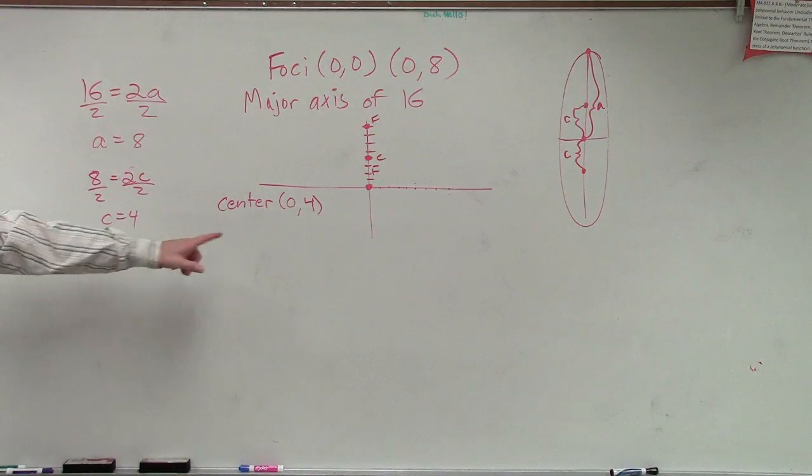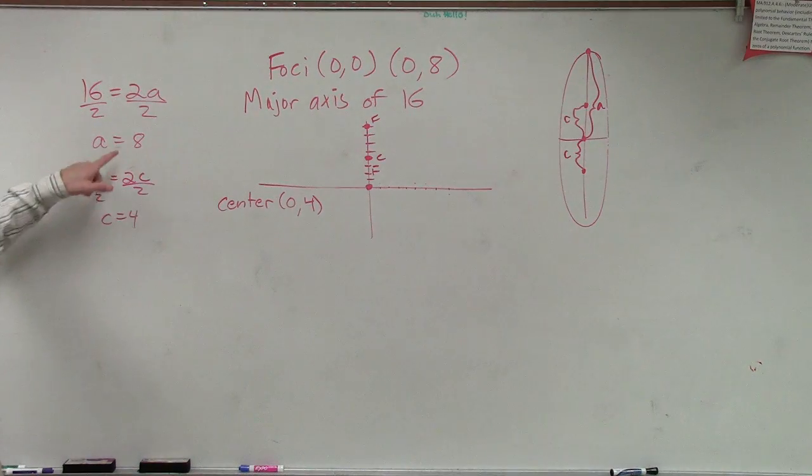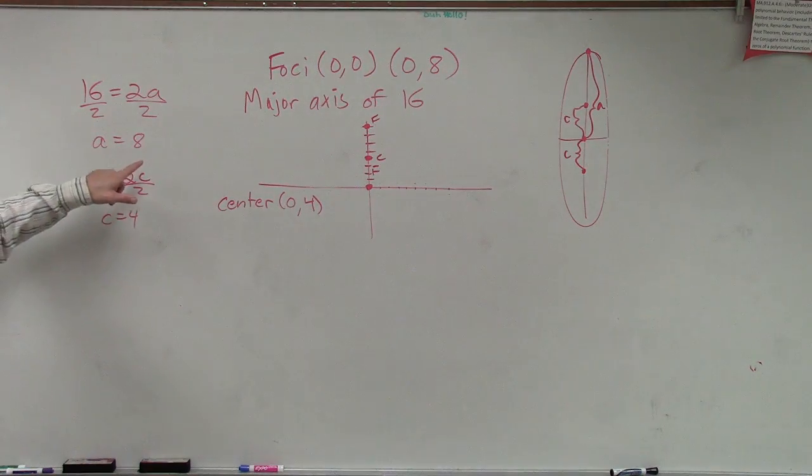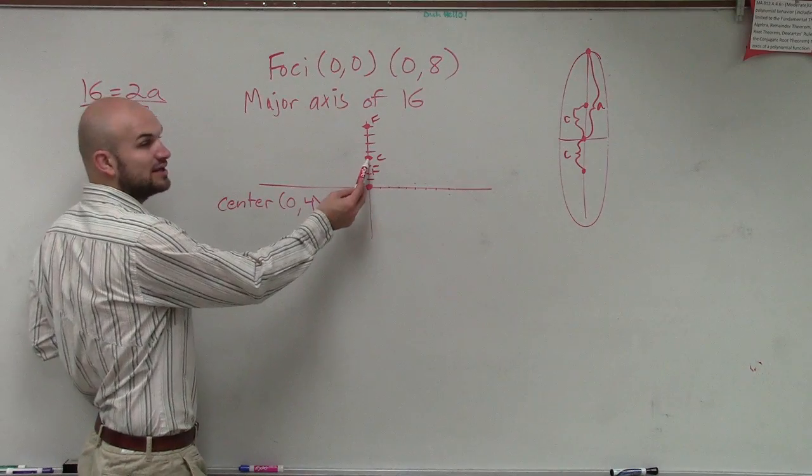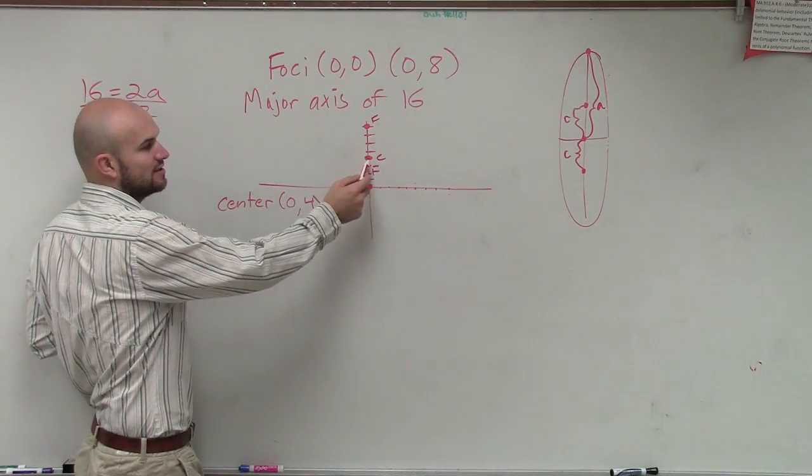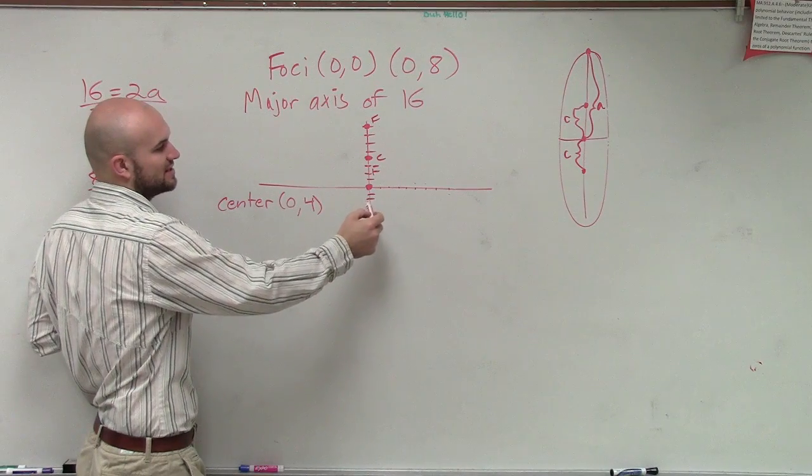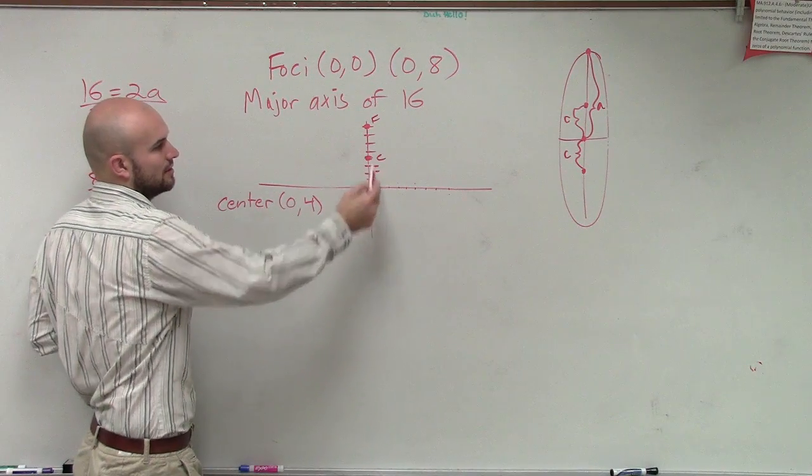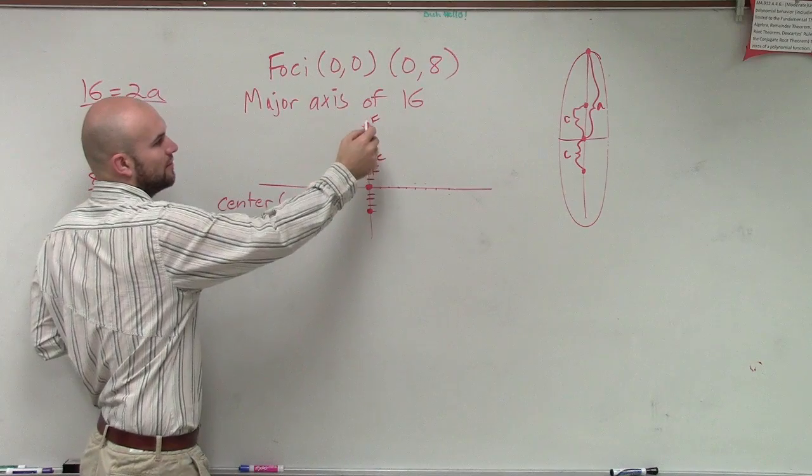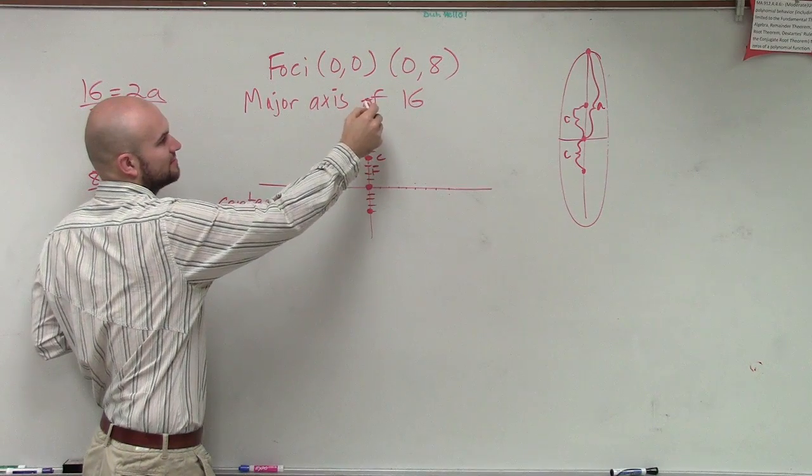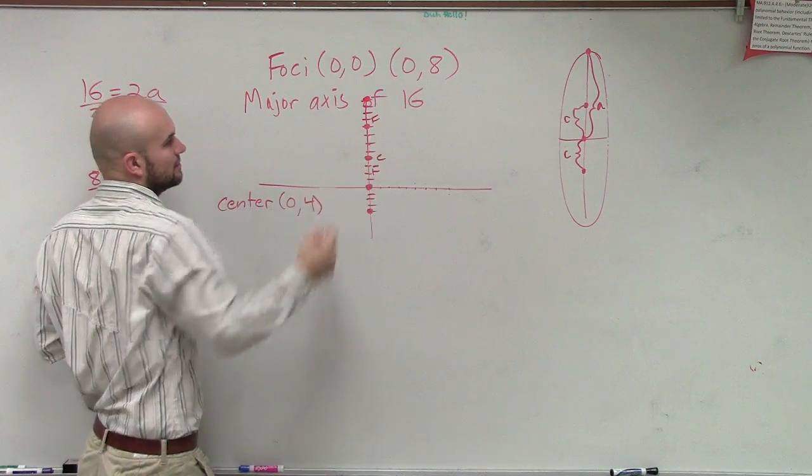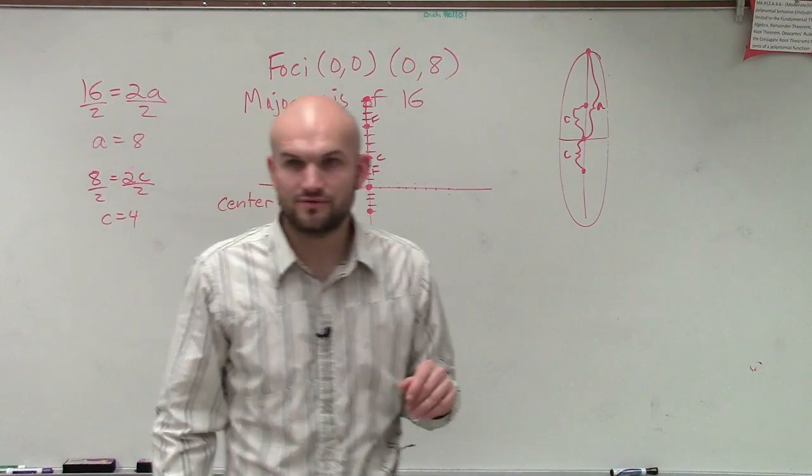And, if the center is at (0, 4), and my A is 8, that means I need to travel 8 units from my center to find each vertice. Does that kind of make sense what I have done so far?